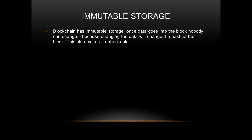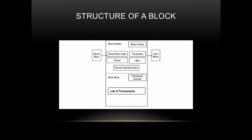Blockchain has immutable storage — once data goes into a block, nobody can change it, because changing the data will change the hash of the block, which will make the other blocks go invalid as the connection will be broken. Even changing a single bit of data changes the hash, making all preceding blocks invalid, which also makes it unhackable.